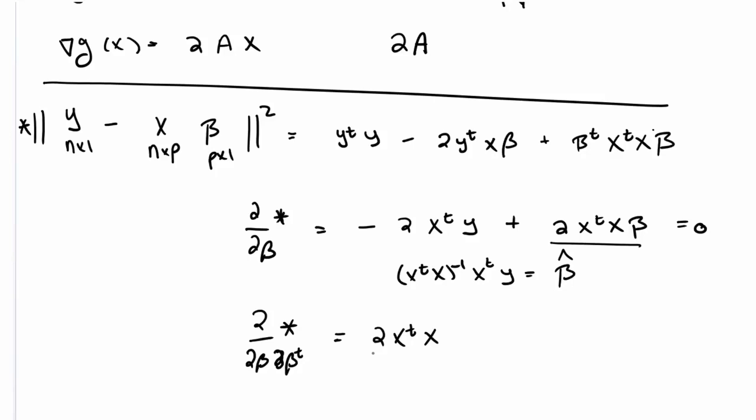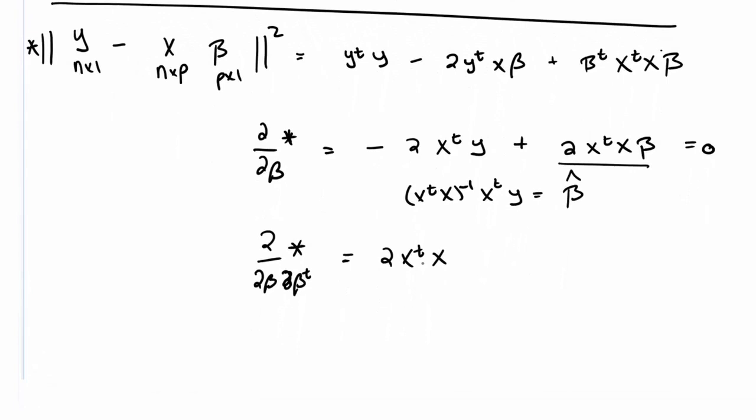Now, having said that, we note that X transpose X and 2, hence 2X transpose X is a positive definite matrix. We can see that because if we take any nonzero vector a and we have a transpose X transpose X a, that is exactly equal to the norm of Xa squared. So thus that has to be greater than or equal to 0.